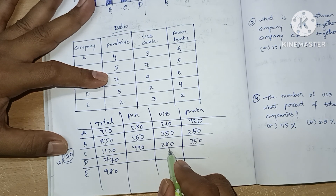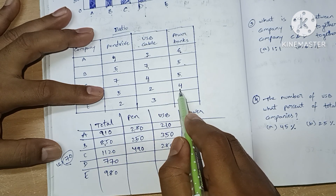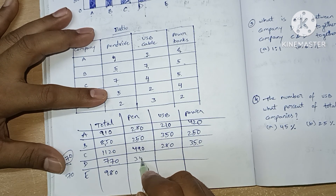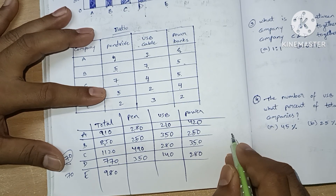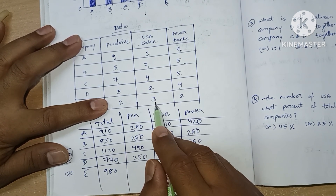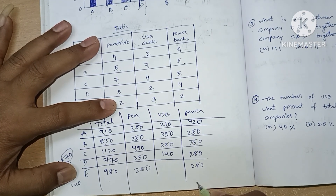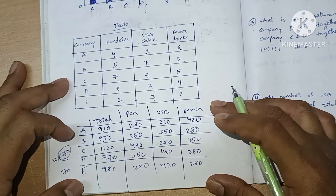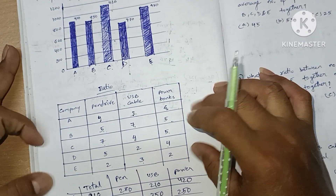Let's check: 630 + 490 = 1120. For Company D, 7+4 = 11 parts, total is 770, so one part = 70. USB cables = 2×70 = 140, power banks = 4×70 = 280. For Company E, 4+3 = 7 parts, total is 980, so one part = 140. Pen drives = 2×140 = 280, USB cables = 2×140 = 280, power banks = 3×140 = 420. This is the required table.